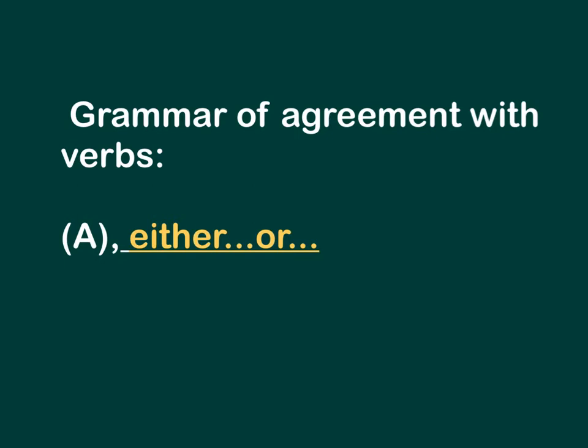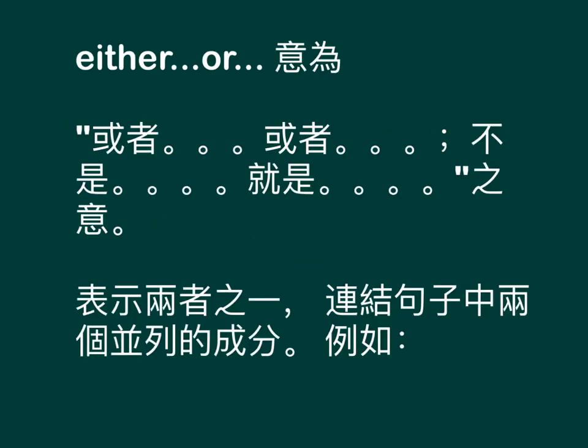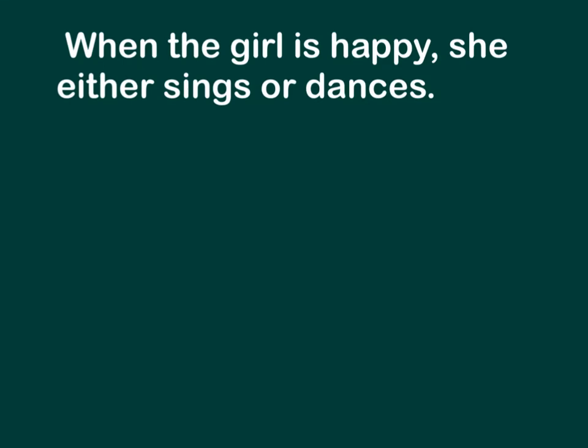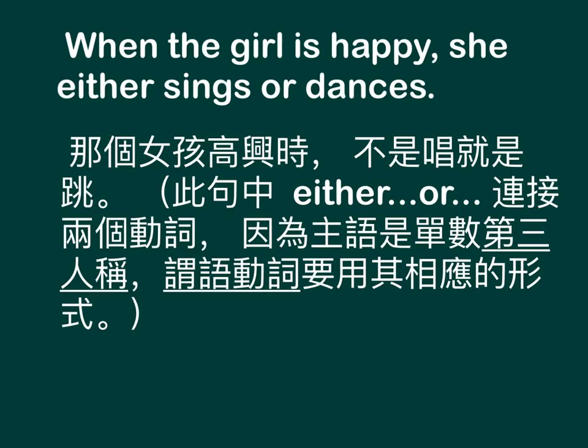Either/or means 不是就是 (one or the other), expressing one of two options. It connects two parallel elements in a sentence. For example: When the girl is happy, she either sings or dances — 那个女孩高兴时，不是唱就是跳 (she either sings or dances). In this sentence, either/or connects two verbs.